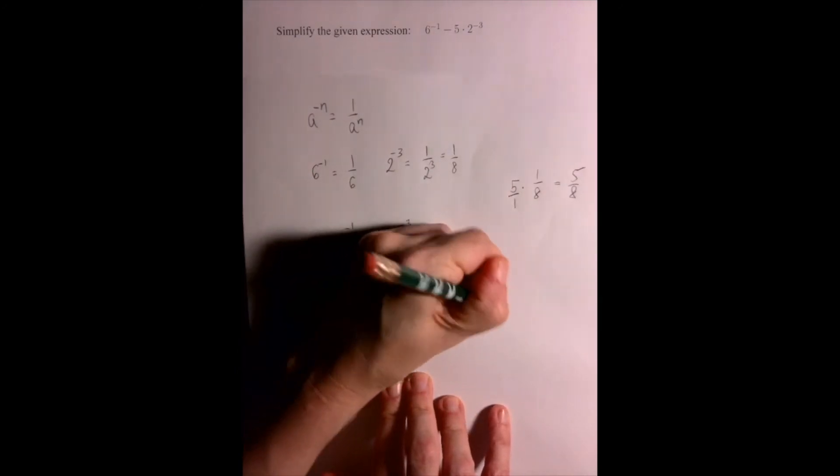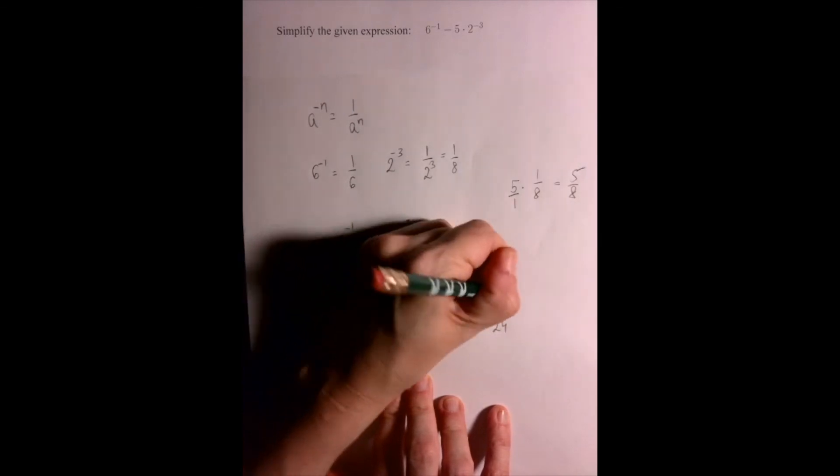4 minus 15 is negative 11, so our answer is negative 11 over 24.